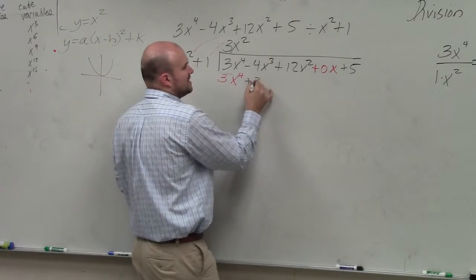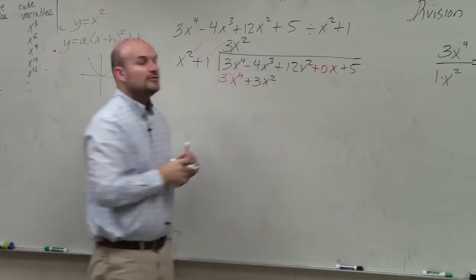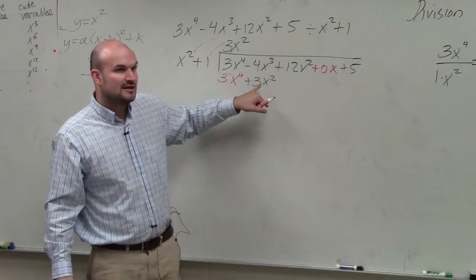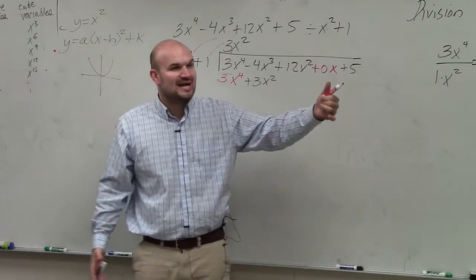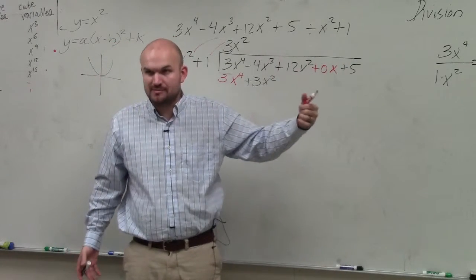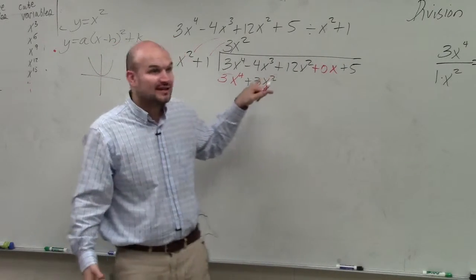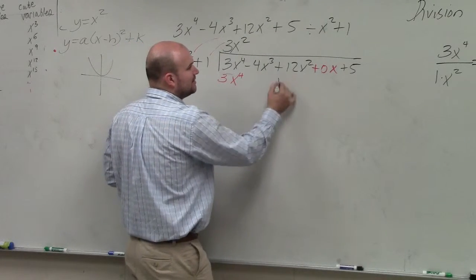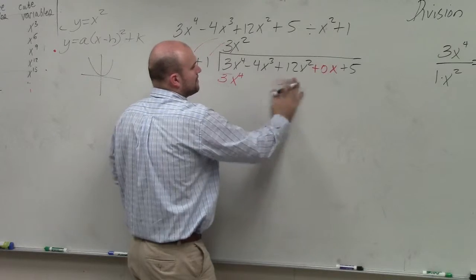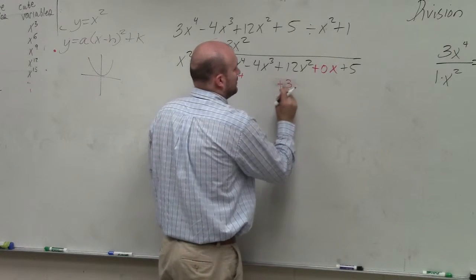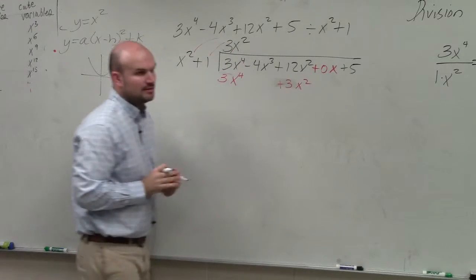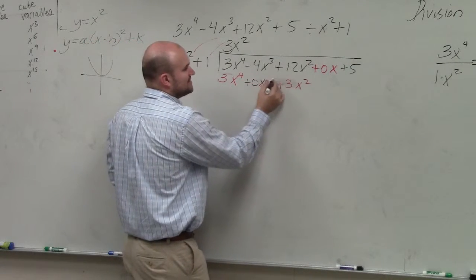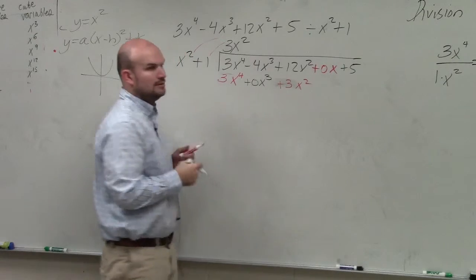So x squared times 3x squared is 3x to the fourth. 3x squared times 1 is 3x squared. A big mistake students do is they put the 3x squared right here. The problem is you cannot combine x cubed and x squareds, because remember, when you're adding and subtracting, they have to be like terms, right? So since these are not like terms, don't put that there. You can only put the 3x squared under the other x squared. So what should I put here? Well, we can use a spacer.